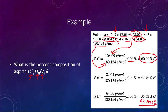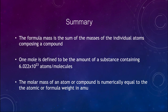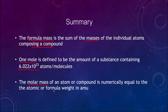To summarize this lecture: the formula mass is the sum of the individual atomic masses of the atoms making up a compound. A mole is the amount of a substance containing 6.022 × 10²³ atoms or molecules. The molar mass is numerically equal to the atomic or formula weight in atomic mass units, and we used these concepts to determine percent compositions. That concludes this lecture on formula mass and the mole concept — see you next time in physical science.